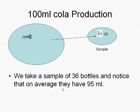We take a sample of size 36. We take these 36 sample bottles and we look at how many milliliters are in every bottle, and we see that on average there are 95 milliliters in these bottles.